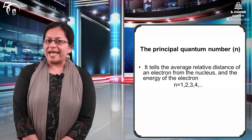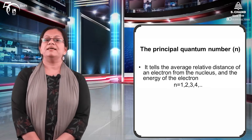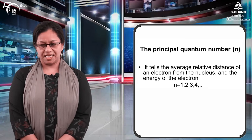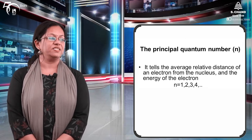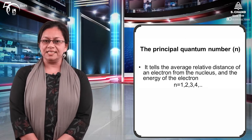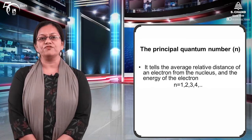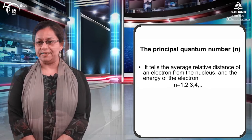The principal quantum number n gives us the total energy of the system and can have values from 1 to infinity. Jab n increase hota hai, toh electron ki spatial arrangement mein difference hota hai — I will tell you about it in a short break.